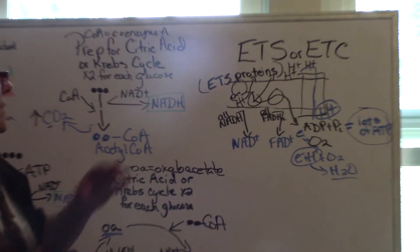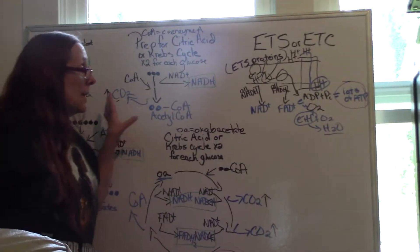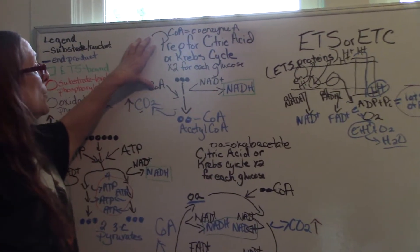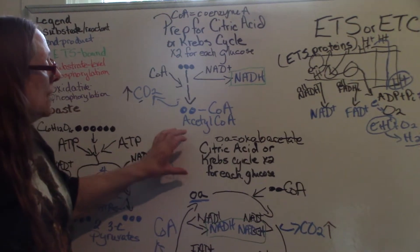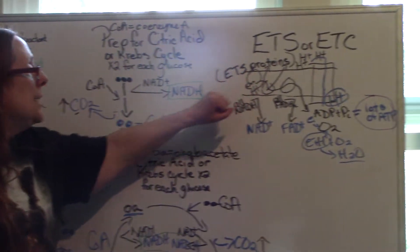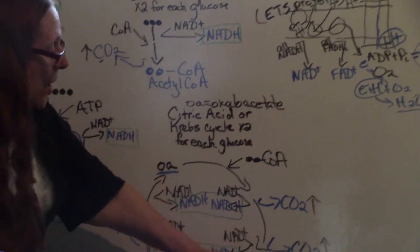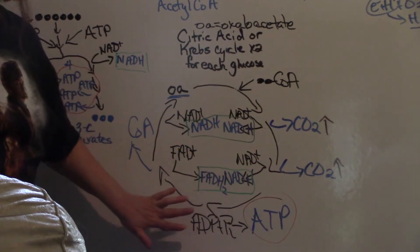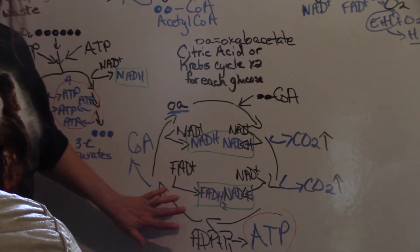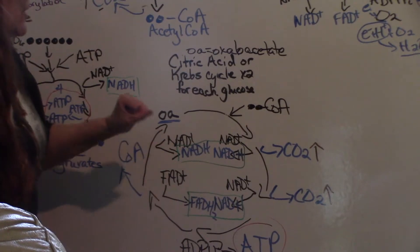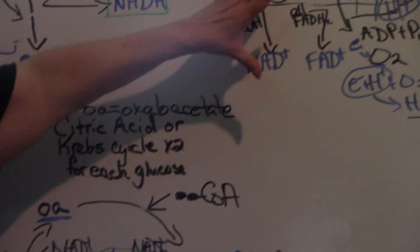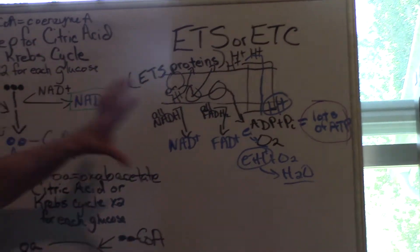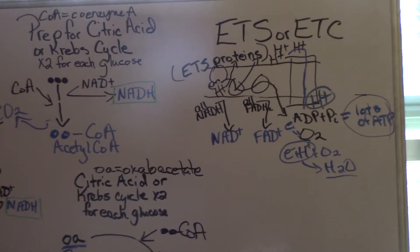So this starts here, glycolysis, to prep for the citric acid cycle, or Krebs cycle, to the citric acid or Krebs cycle, to the ETS. Notice that all the glucose is gone by the end of the citric acid cycle. The only thing we have, the only remnants are the electrons and the hydrogen ions that go to the ETS, and that is where most of the ATP comes from.